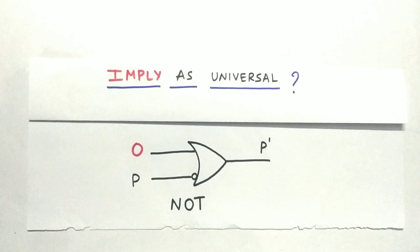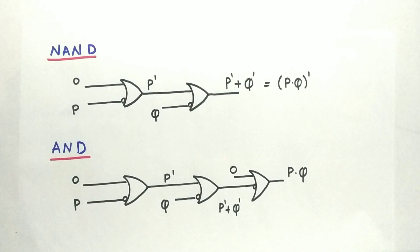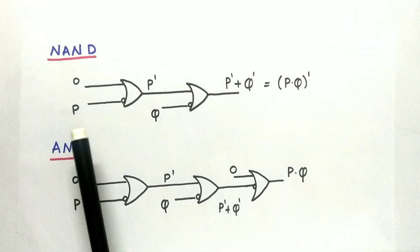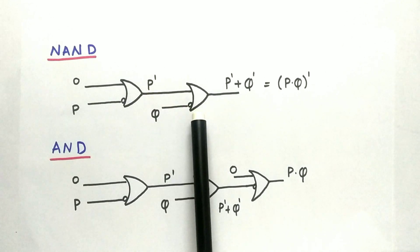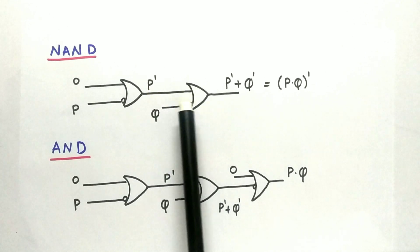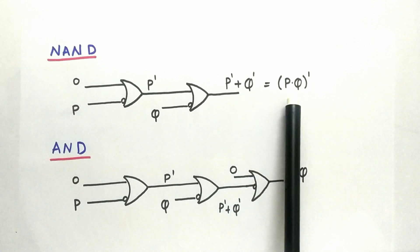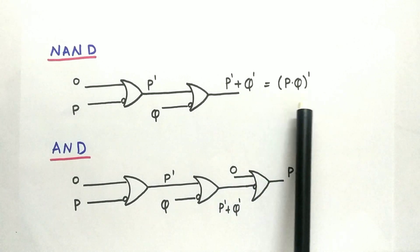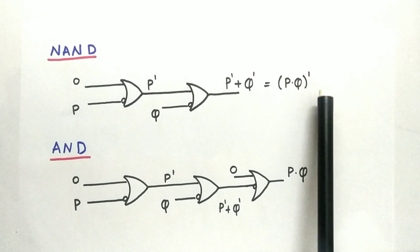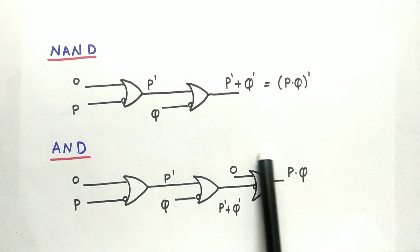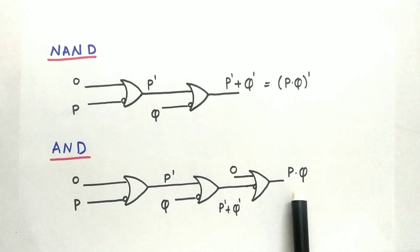Now let's check whether the implied gate can perform NAND and AND operations. Yes, the implied gate can act as a NAND gate and AND gate if connected as such. Here we give one input as 0 and the other as P, getting P complement. This P complement is given to another implied gate with input Q, giving us P·Q̄ — the NAND operation. To get the AND operation we remove the complement using a NOT gate with one input as 0, giving us P·Q.